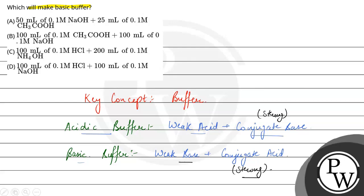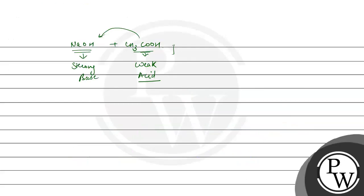Option B: 100 ml of 0.1 molar CH3COOH and 100 ml of 0.1 molar NaOH. Again we have CH3COOH and NaOH. CH3COOH is a weak acid and NaOH is a strong base — so this is also weak acid plus strong base, and will not make a basic buffer.